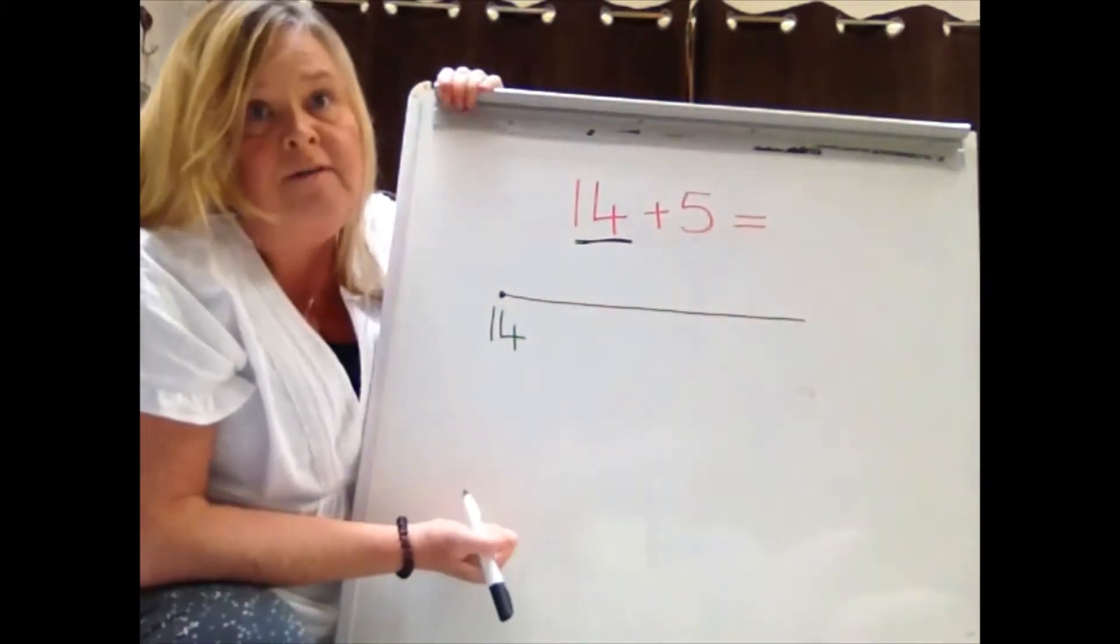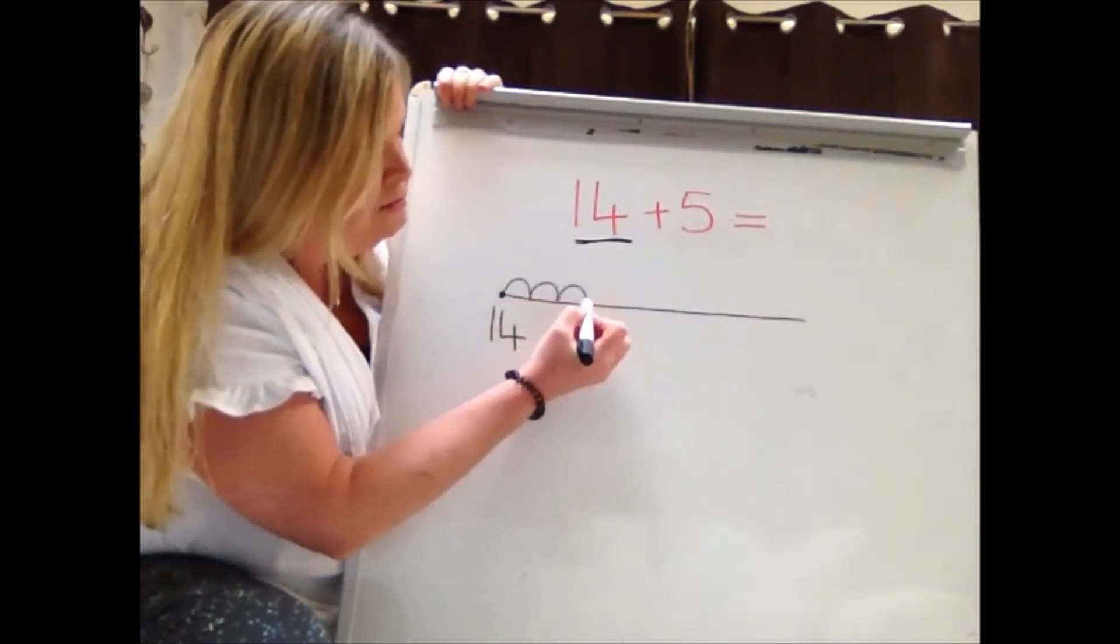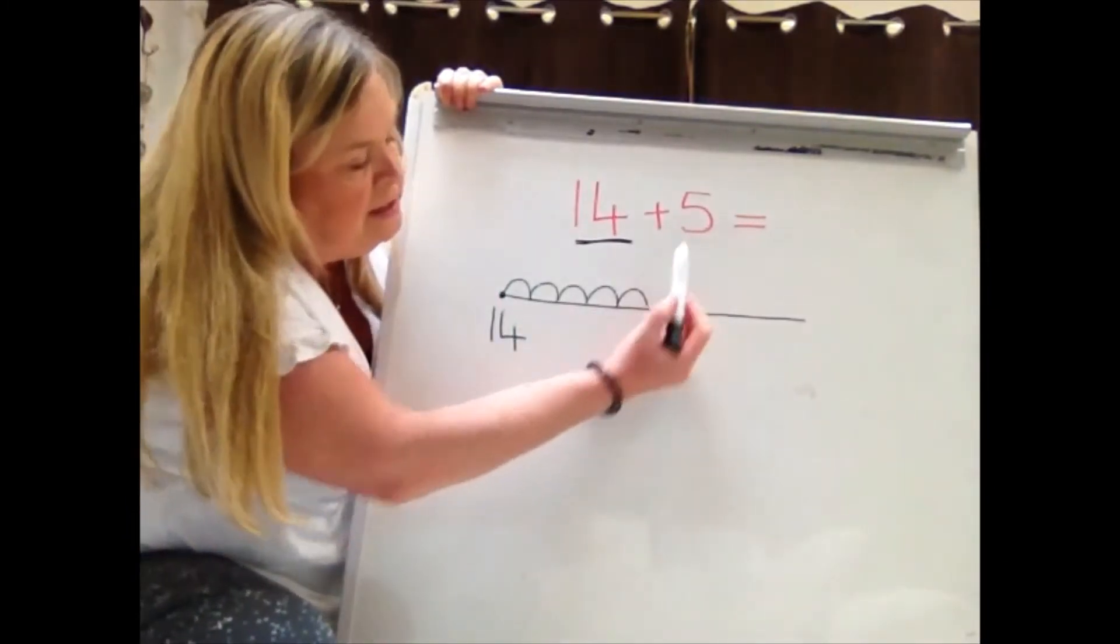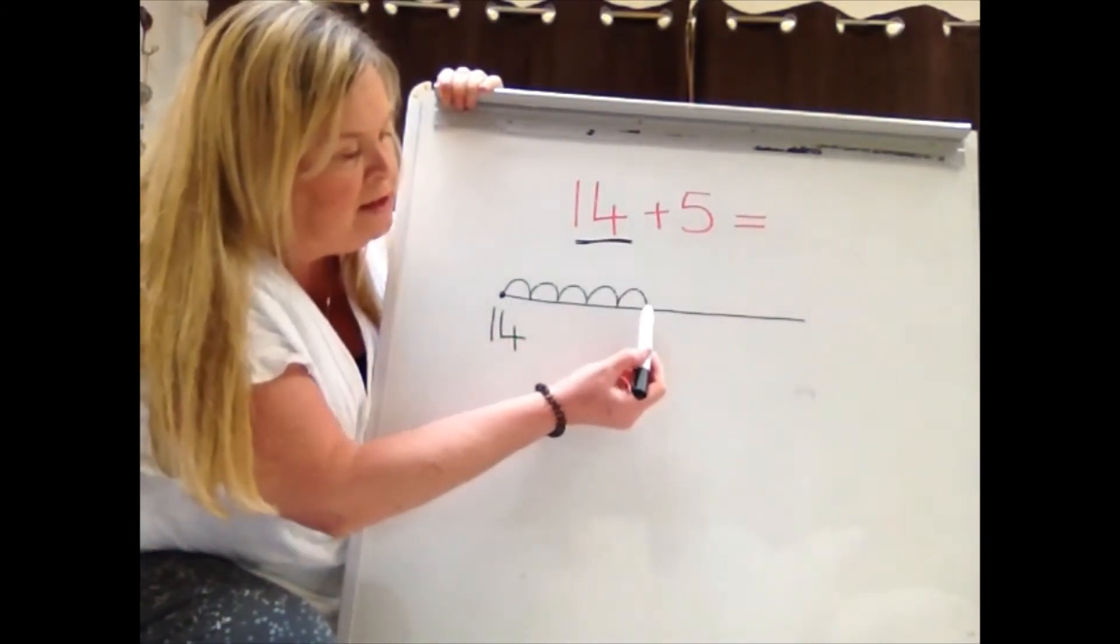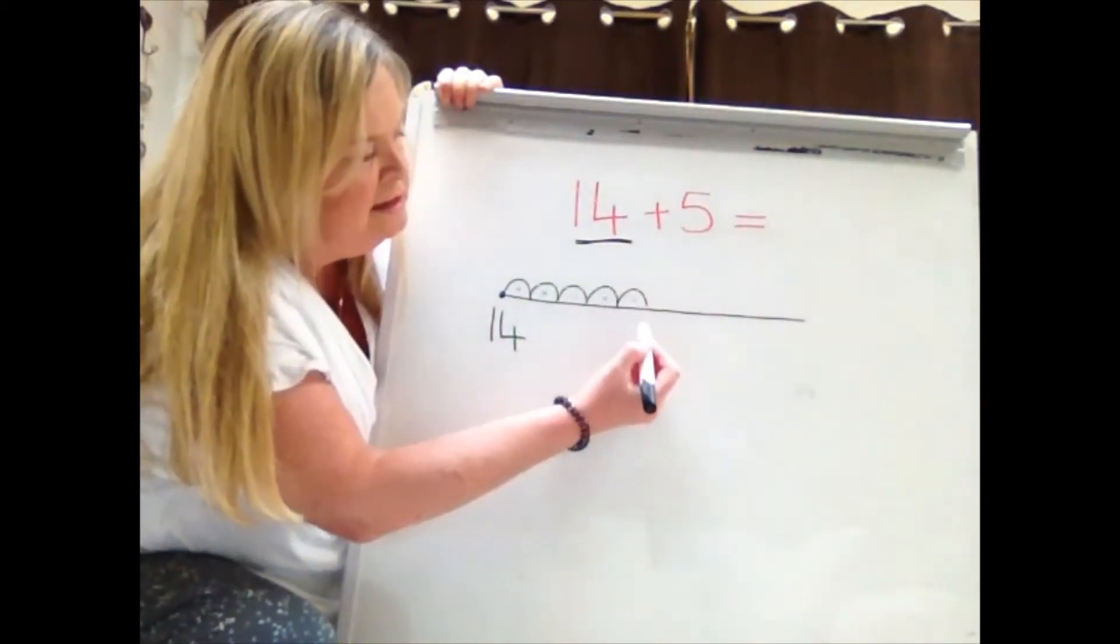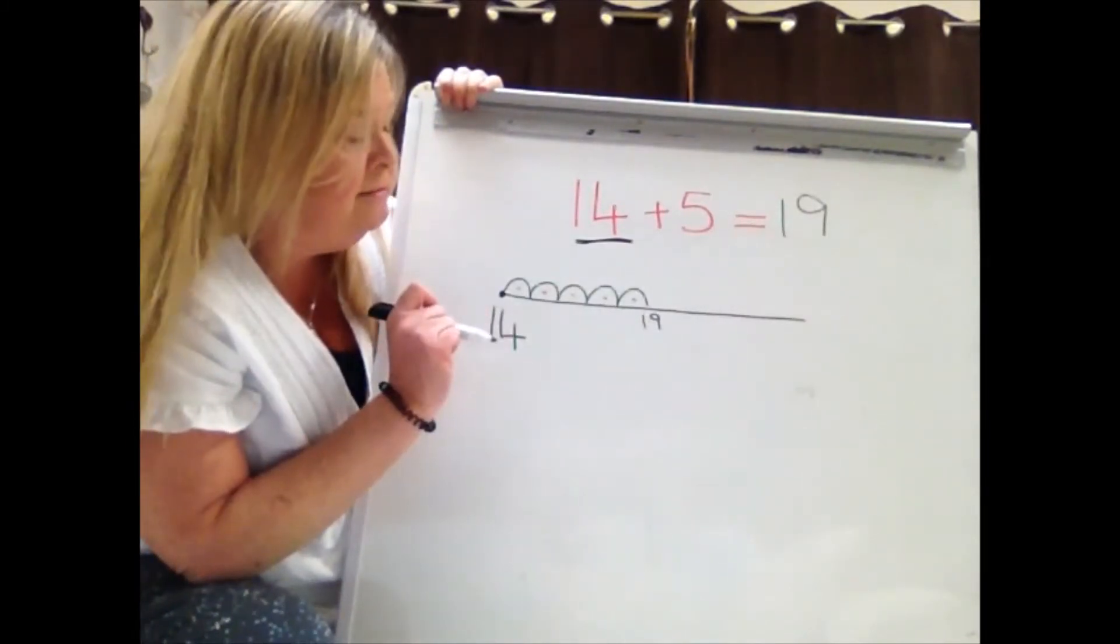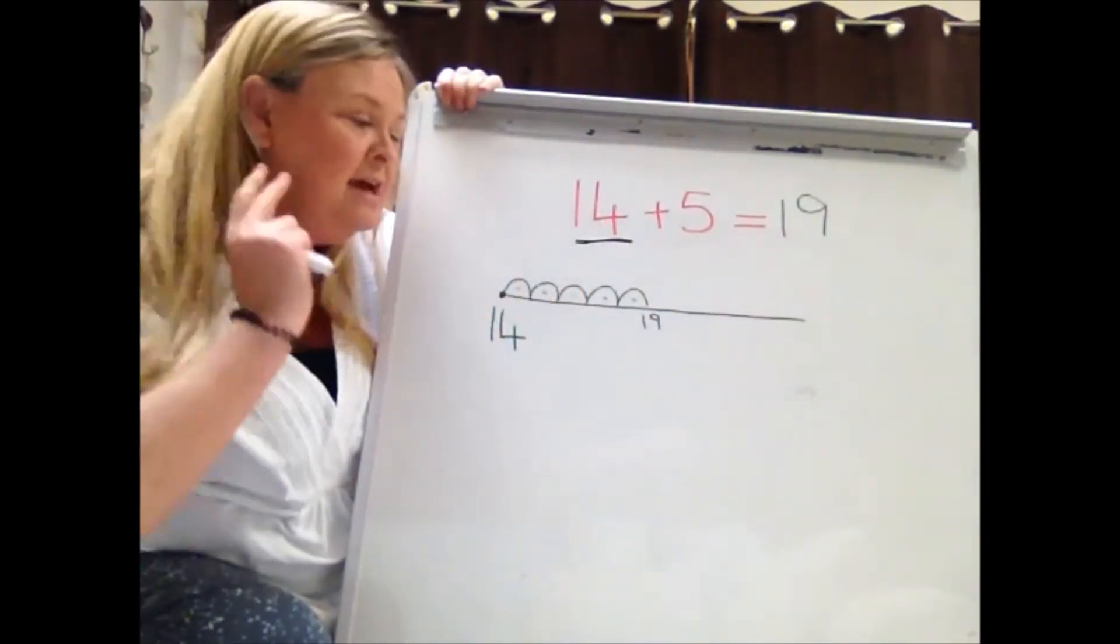And then we would normally count on 5, so I'm going to do 5 little jumps: 1, 2, 3, 4, 5, just like we normally would do if we had a paper number line in front of us. So 14 plus 5, and then I'm going to count along from 14, counting the jumps as I go. Start with 14, 15, 16, 17, 18, 19, and I'll write 19 underneath. And there's my answer. Now I know a lot of you can do this in your head, but remember we're learning how to use an empty number line to help us add.